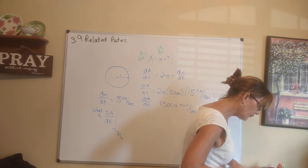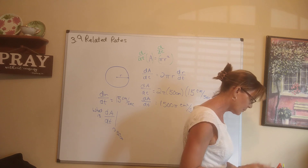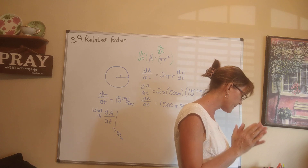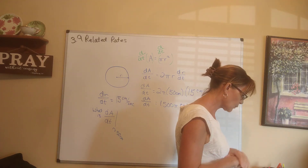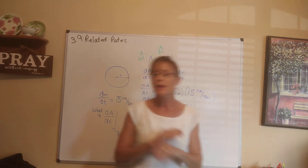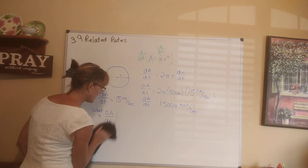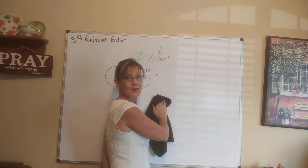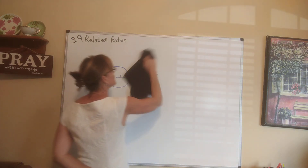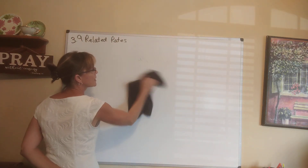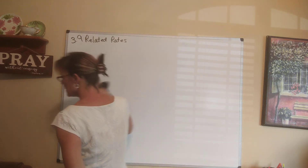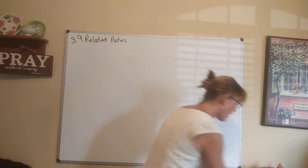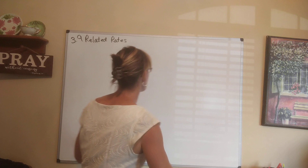A ladder 20 feet long leans against a house. If the bottom of the ladder slides away from the house horizontally at a rate of 4 feet per second, how fast is the ladder sliding down the house when the top of the ladder is 8 feet from the ground? This definitely calls for a picture. You don't have to be a great artist, just enough to label the information.